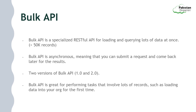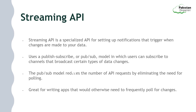Next is the Streaming API. Streaming API is a specialized API for setting up notifications that trigger when changes are made to your data. It works in the publish-subscribe model, in which users can subscribe to channels that broadcast certain types of data changes. This reduces the number of API requests by eliminating the need for polling. Platform events and change data capture use Streaming API, working in the PubSub model to pass data.